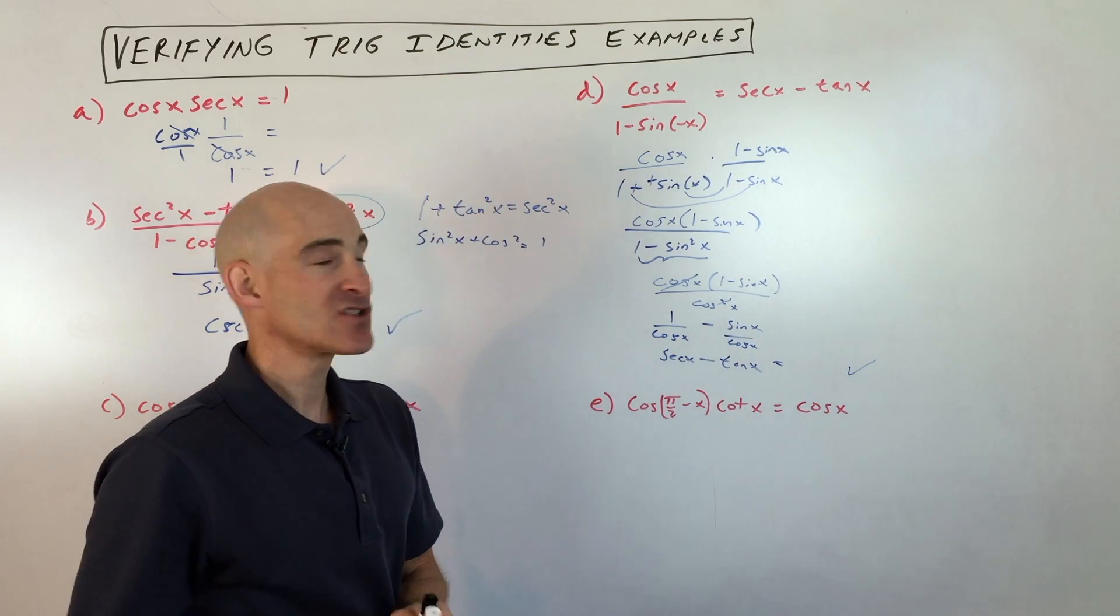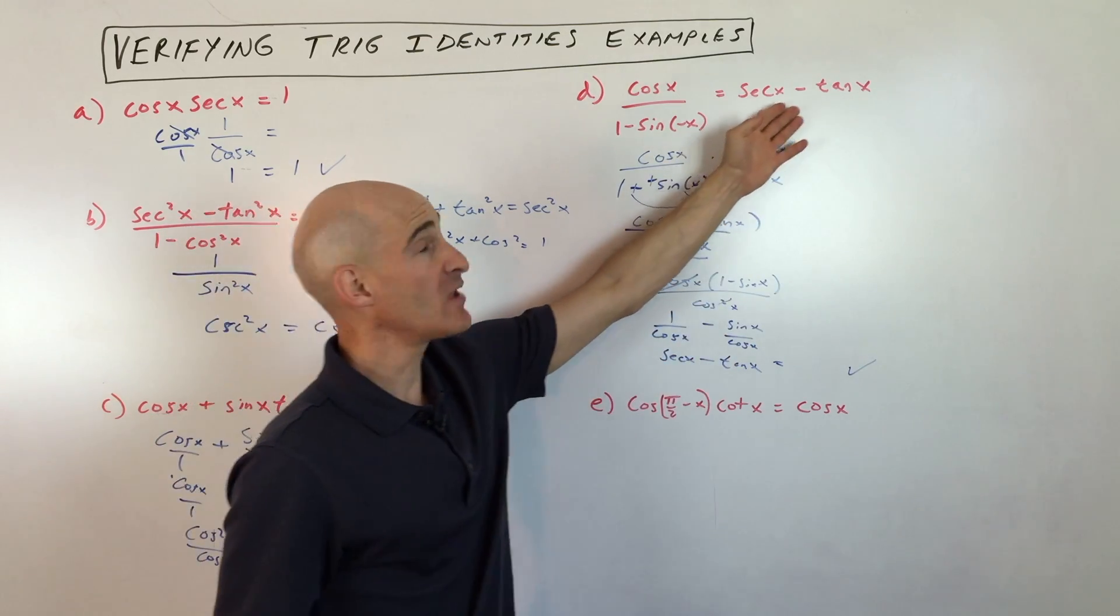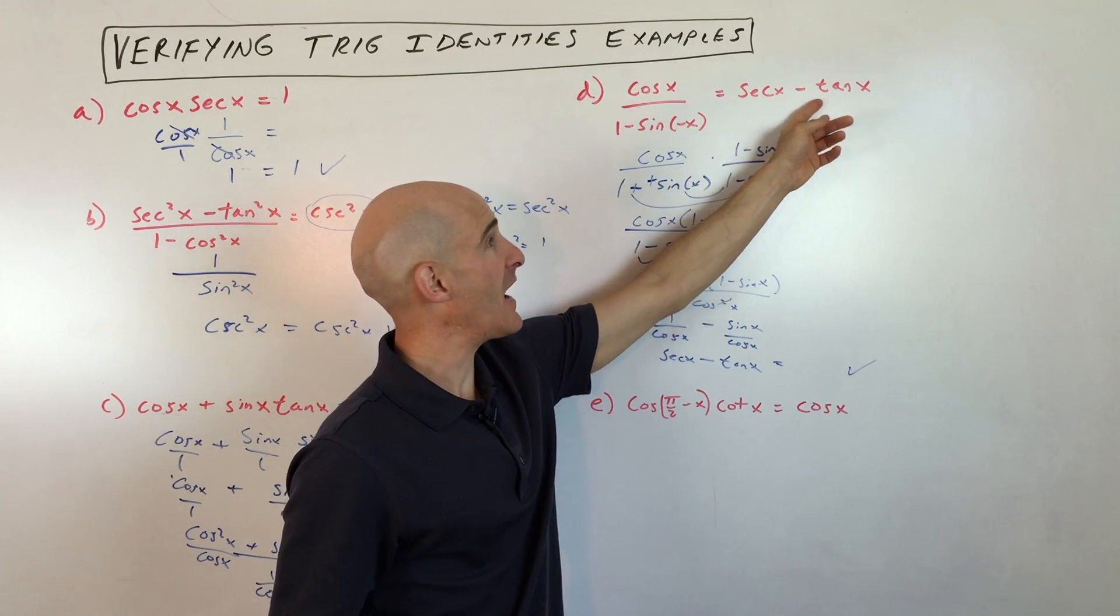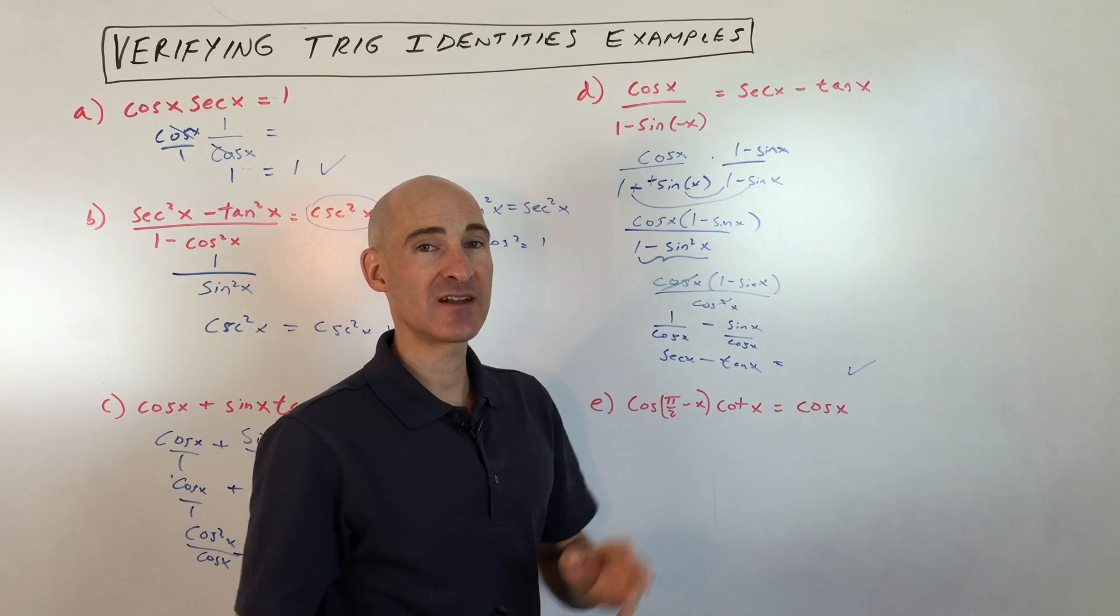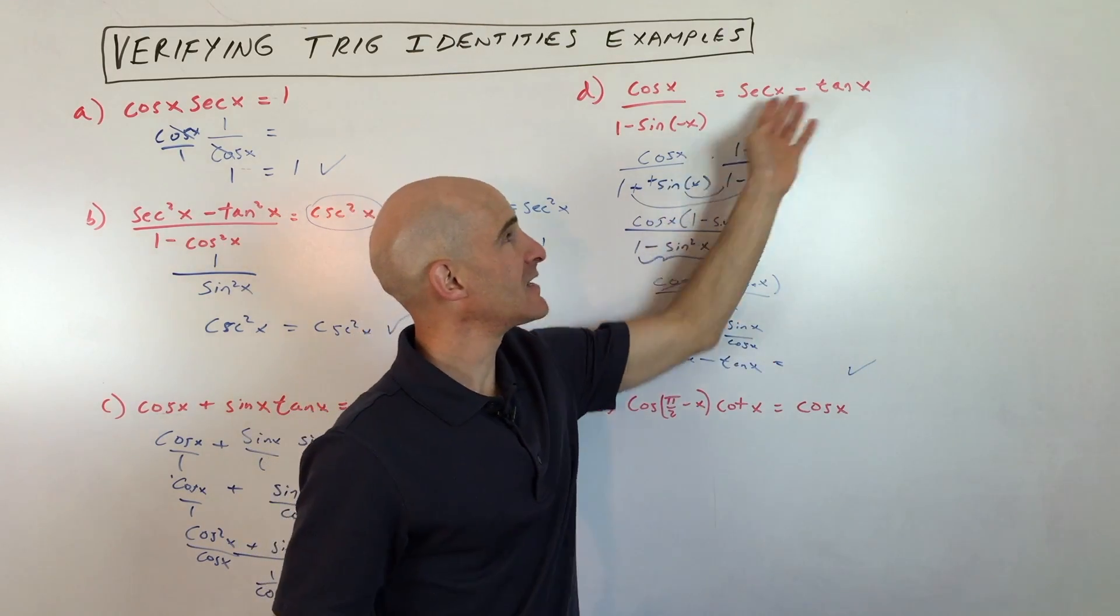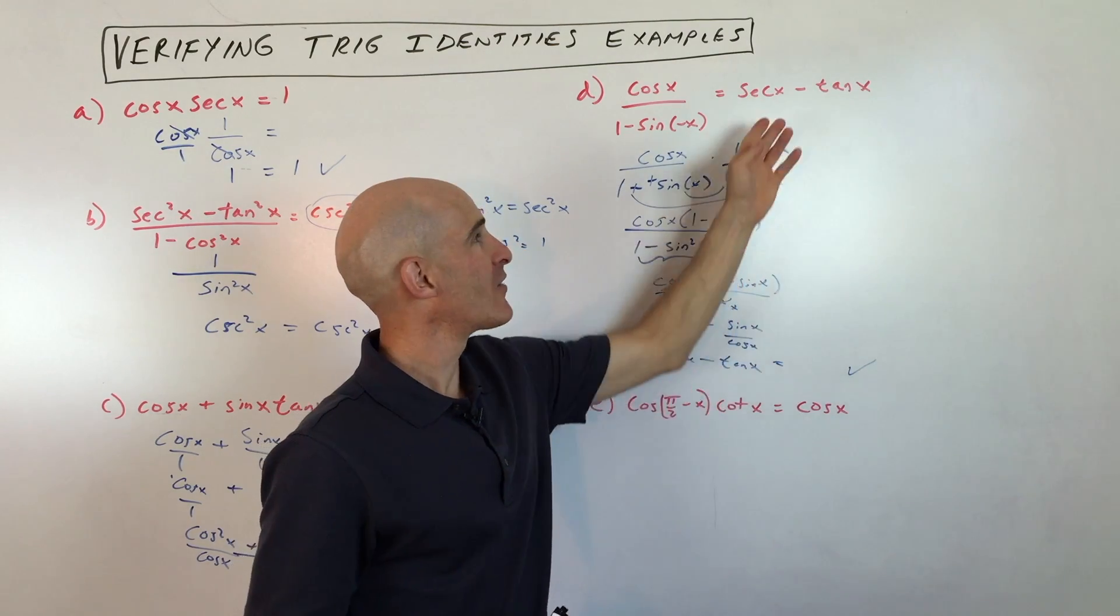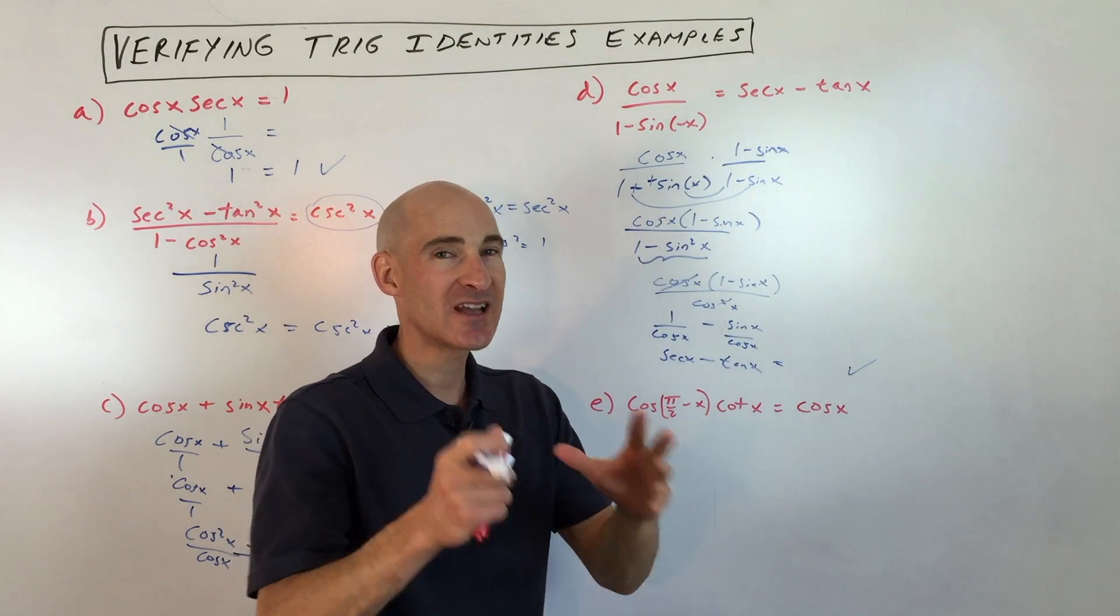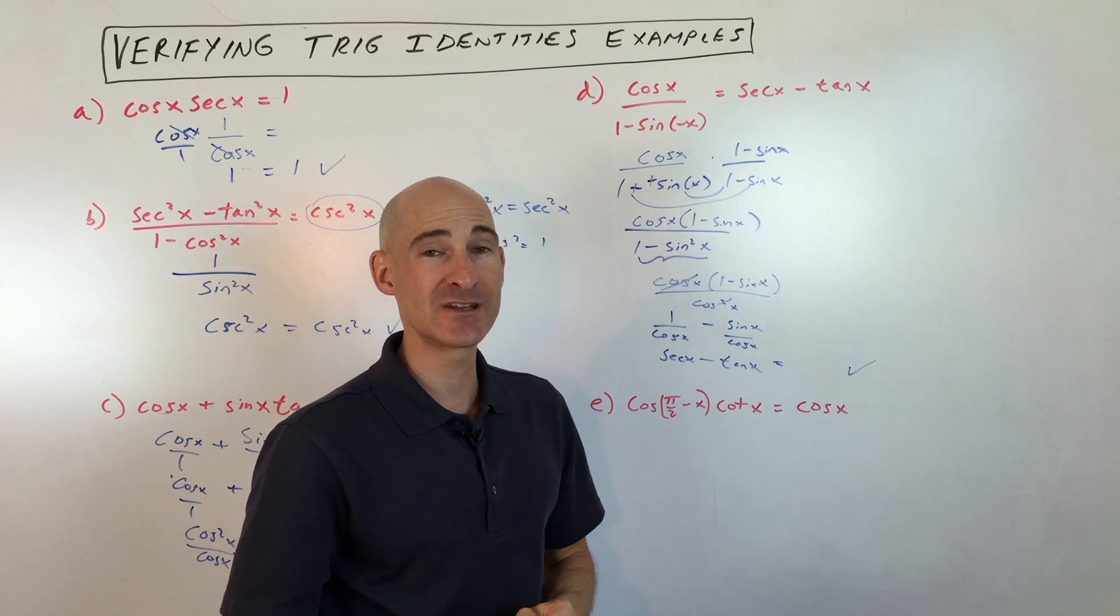Now, I didn't mention this earlier, but what you want to do, because it's an identity, you already know the answer. So you want to keep your eye on the right side or the left side of the equation, because you know where you want to take this. So you can kind of garner some hints from looking at that other side of the equation and kind of steer your decisions about what types of substitutions you might want to do.